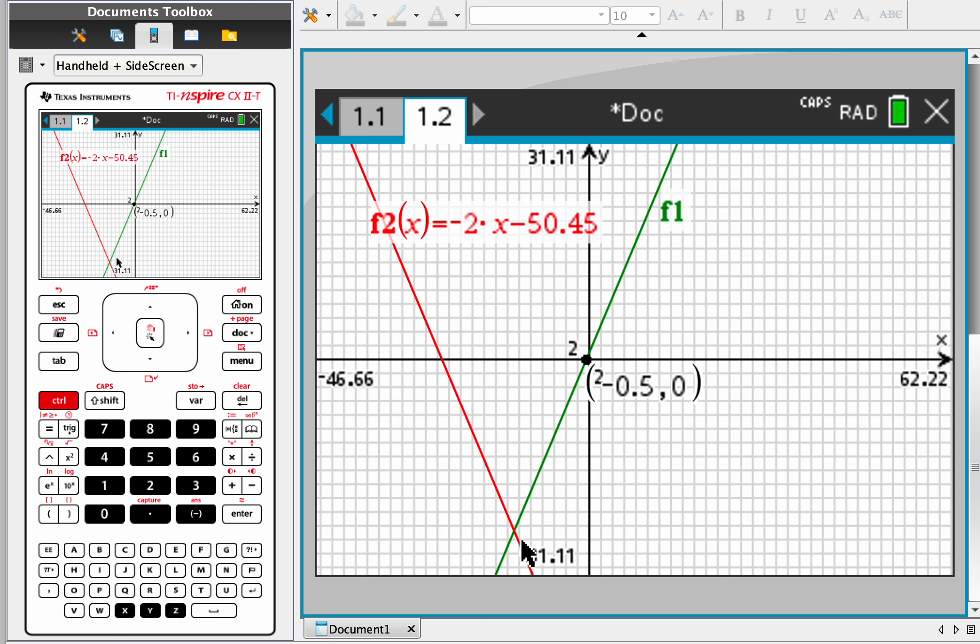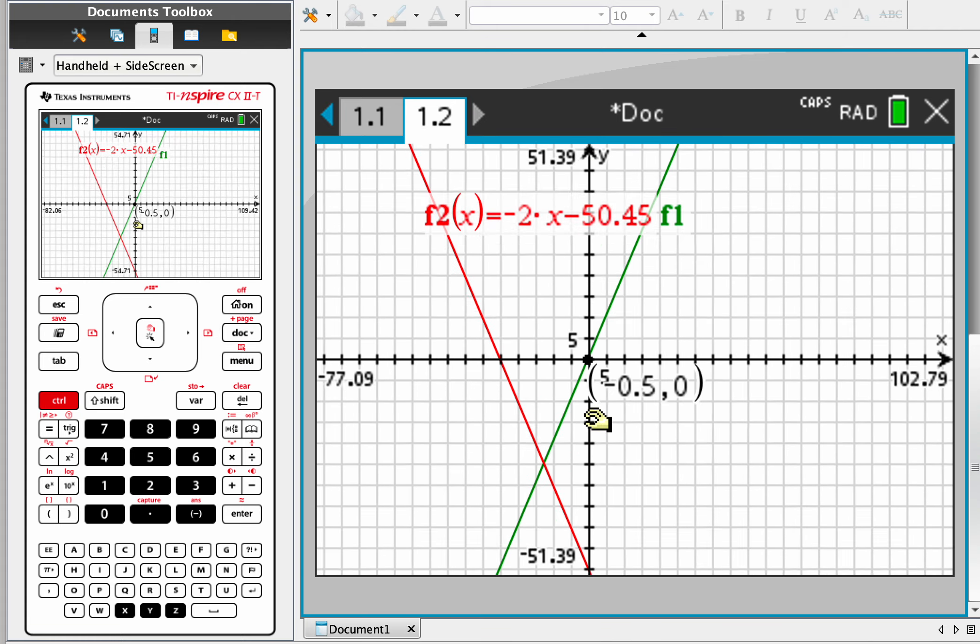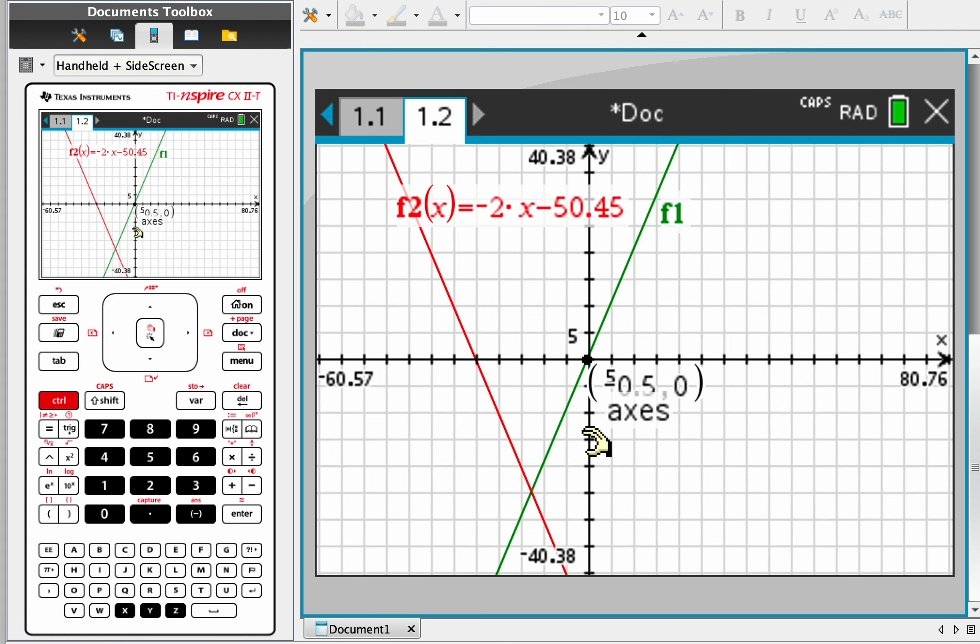So already we can see there's a point of intersection down there. Let's grab the y-axis and move that up or down. This may be one of the easiest ways to navigate through here.